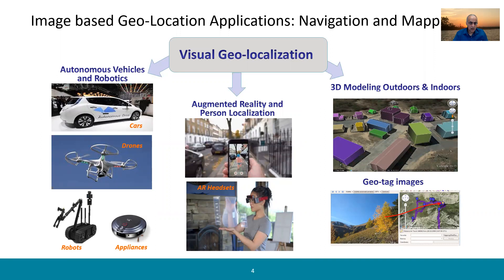It has many applications. Autonomous cars and robots need to know where they are, and matching using the camera sensor to models of the world is one way. Drones and robots are another use case. Augmented reality is another application, especially outdoor augmented reality, but it could be even for indoors — given the image from your smartphone camera or headset, you want to figure out exactly where you are in world coordinates, so you can do insertions based on those coordinates. Image-based geolocalization is also a part of what's required for building 3D models.